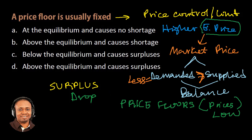So now let us go to the question. A price floor is usually fixed. Option A: at the equilibrium — that is not correct — and causes no shortage — that is not correct.